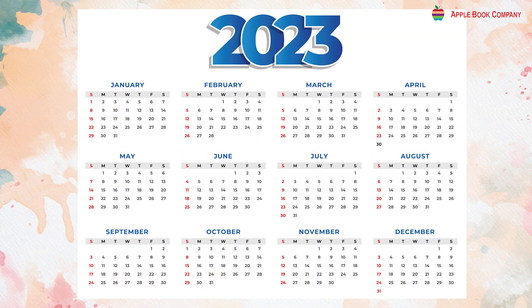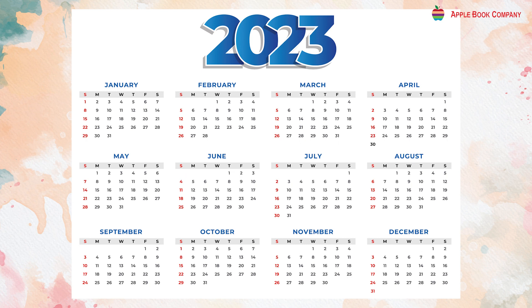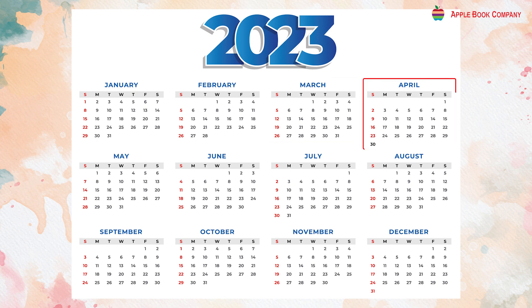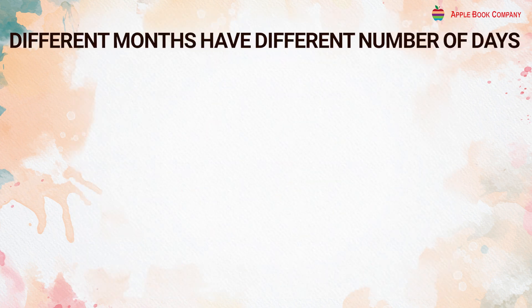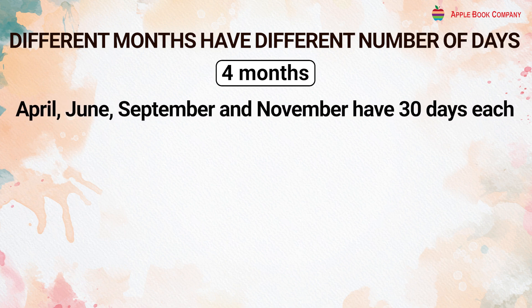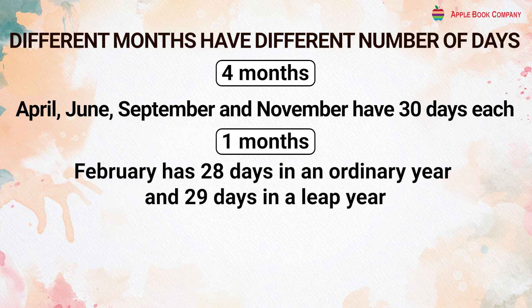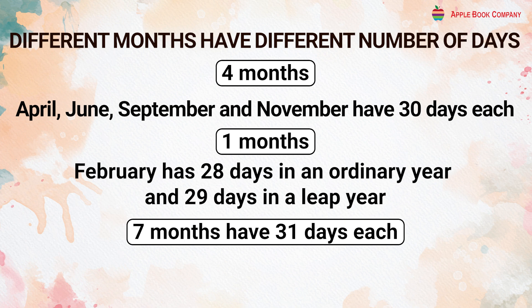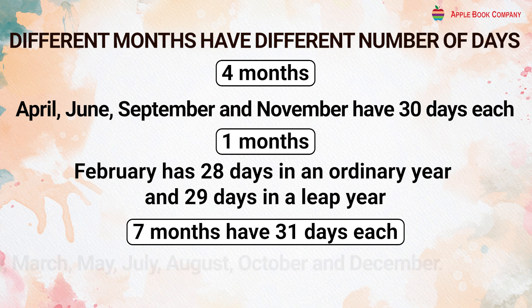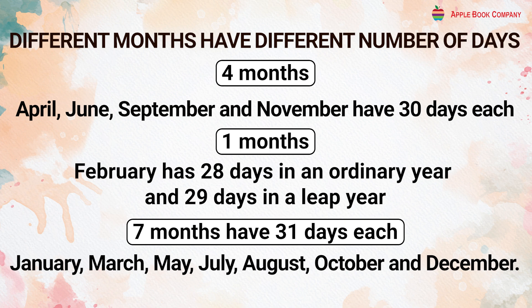Calendar. A calendar shows days and dates for all 12 months of a year: January, February, March, April, May, June, July, August, September, October, November, and December. Different months have different numbers of days. Four months — April, June, September, and November — have 30 days each. One month — February — has 28 days in an ordinary year and 29 days in a leap year. The remaining 7 months — January, March, May, July, August, October, and December — have 31 days each.